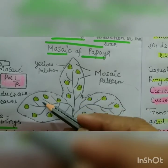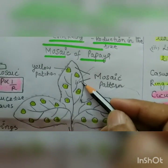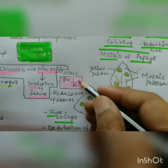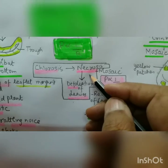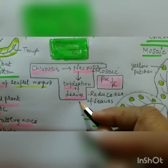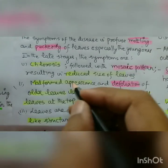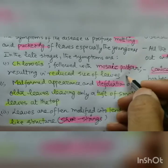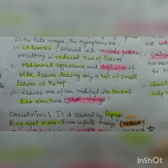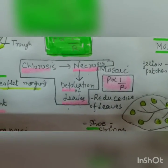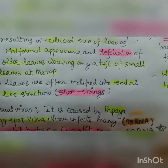As these spots increase, the area for photosynthesis decreases, and since photosynthesis is inversely proportional to respiration, respiration increases. Chlorosis is followed by necrosis and then defoliation of leaves and the death of the plant. In late stages the symptoms are chlorosis and mosaic pattern with mottling, resulting in reduced size of leaves because photosynthesis is reduced but respiration increases. There is a malformed appearance and defoliation of leaves — chlorosis followed by necrosis, then defoliation.